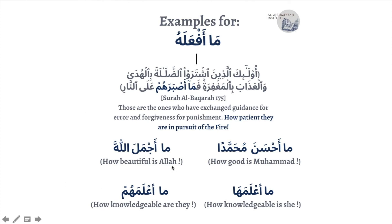More examples with this pattern: مَا أَجْمَلَ اللَّهَ means 'how beautiful is Allah' — the attribute is أَجْمَلَ and the word that follows is the thing with the amazing attribute. مَا أَحْسَنَ مُحَمَّدًا means 'how good is Muhammad.' مَا أَعْلَمَهُمْ means 'how knowledgeable are they,' where هُمْ is the thing with the attribute, and أَعْلَمَ is the attribute itself. مَا أَعْلَمَهَا means 'how knowledgeable is she.'